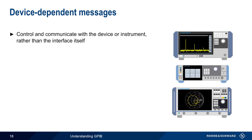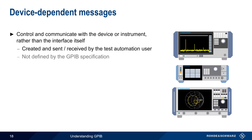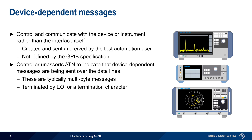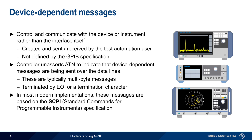As opposed to interface messages which control the GPIB interface, device-dependent messages control the device or instrument itself. These are created and sent by the test automation user and are not defined as part of the GPIB specification. After talker and listeners are addressed, the controller unasserts ATN to indicate that device-dependent messages are being sent over the data lines. In most cases these are multibyte messages, which are terminated either using the special EOI signal or by using special termination characters. In most modern implementations, these device-dependent messages are based on the SCPI standard.